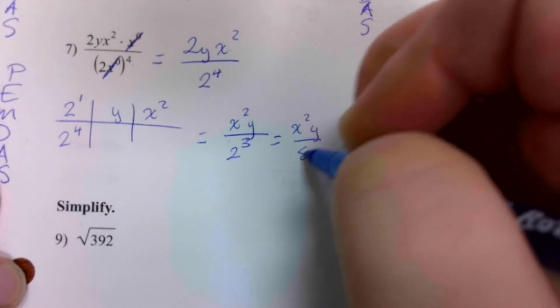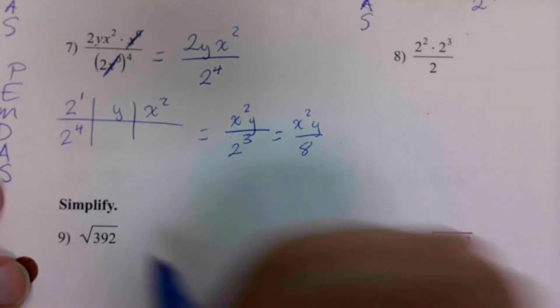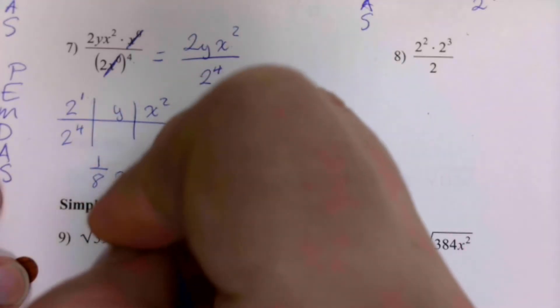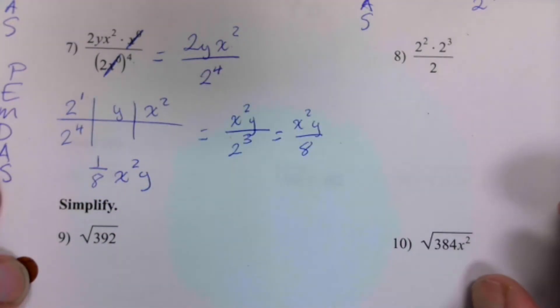And how they're more likely to write it is one over eight x squared y. Same thing. Make sure you're writing neatly.